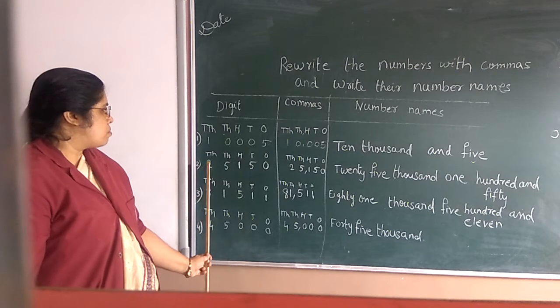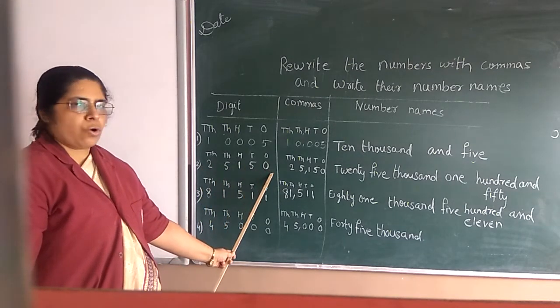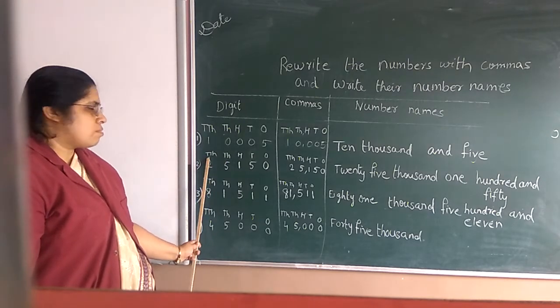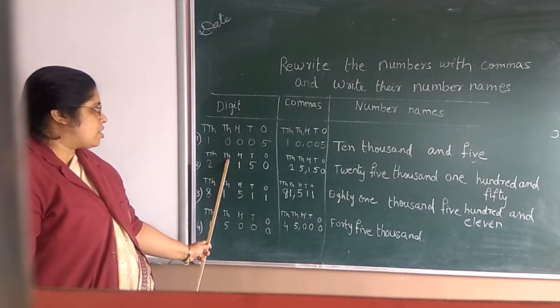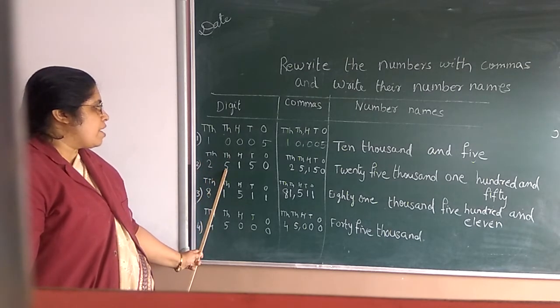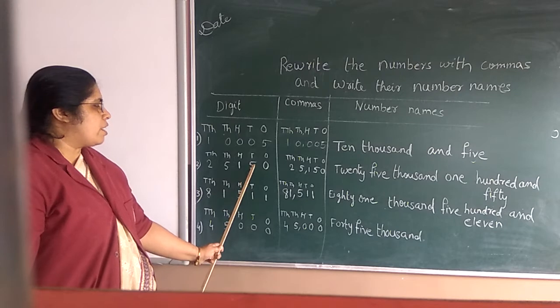Second number 2, 5, 1, 5, 0. How you will write this number? T, T, X. This is 10,000 and this one T, X. These two together you have to write. 25,150.